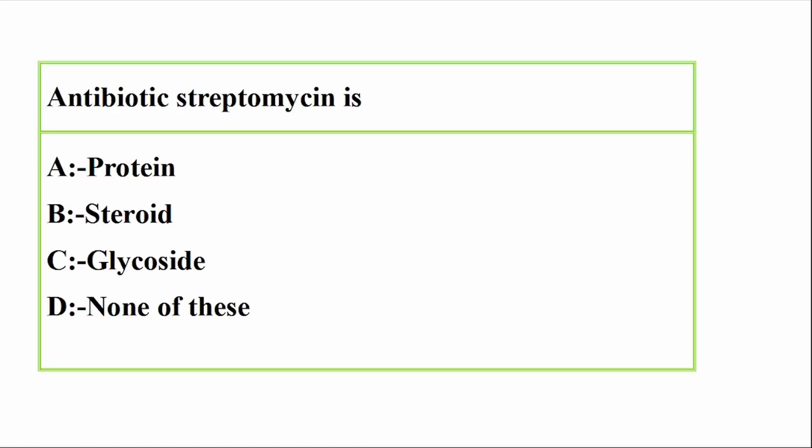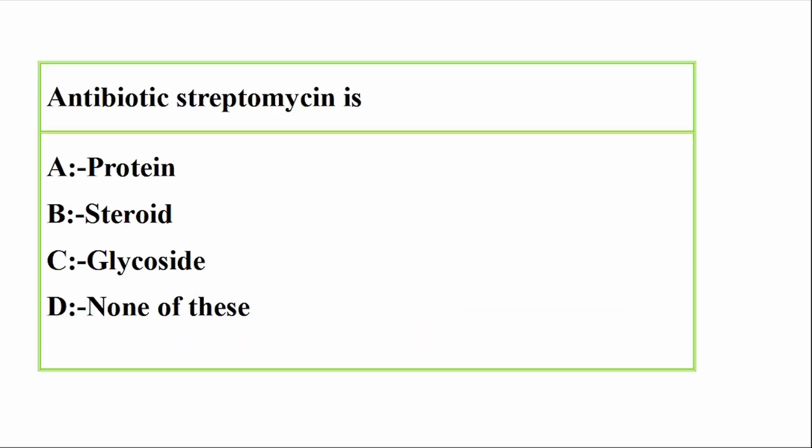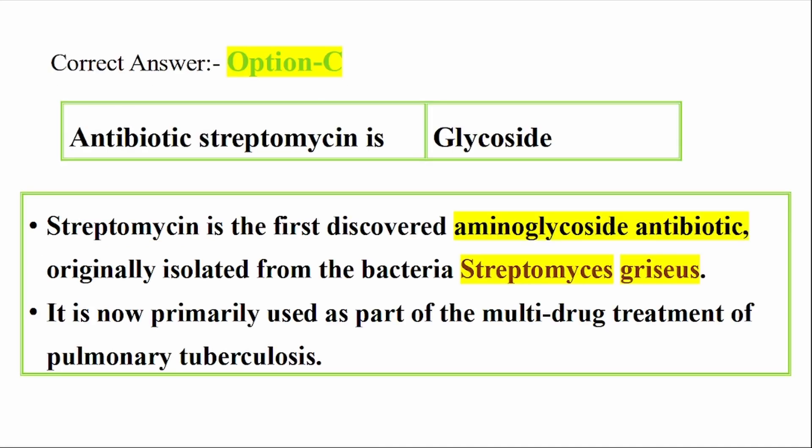Question: Antibiotic streptomycin is? Options: A. Protein, B. Steroid, C. Glycoside, D. None of these. Correct answer: Option C, Glycoside. Antibiotic streptomycin is a glycoside.